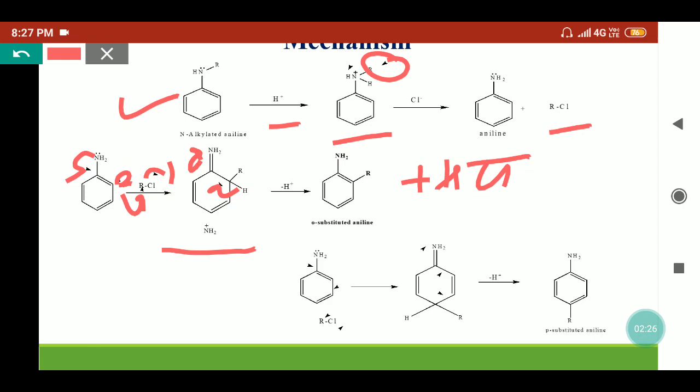In similar fashion, para-product will form where the nitrogen lone pair will go to the ring and increases the charge density on the para-position. This partial negative charge on the para-position will attack on the R group of RCl, that is alkyl chloride, and releases Cl-. So we will get this species as an intermediate. Now, this complex will release the H+ ion back to give the aromaticity to the ring and will get the para-substituted aniline as a product.